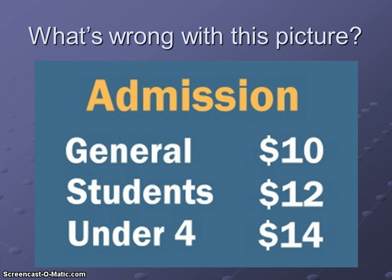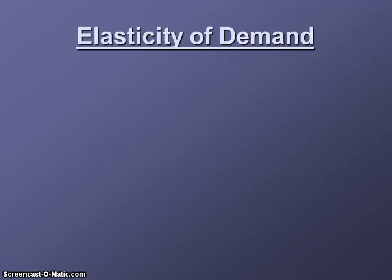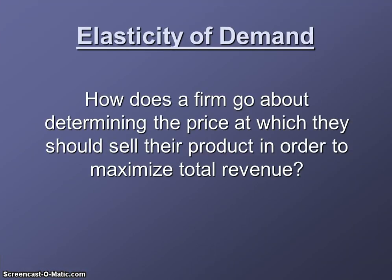We know from our studies in Units 1 and 2 that price is going to affect the amount of something that people will purchase. The law of demand tells us as price increases, people buy less. Elasticity takes that a step further and focuses on how important pricing is from a business's perspective, looking at how the amount that people purchase changes in relationship to the amount that the price changes. Elasticity of demand explores how a firm goes about determining the price at which they should sell their product in order to maximize total revenue.